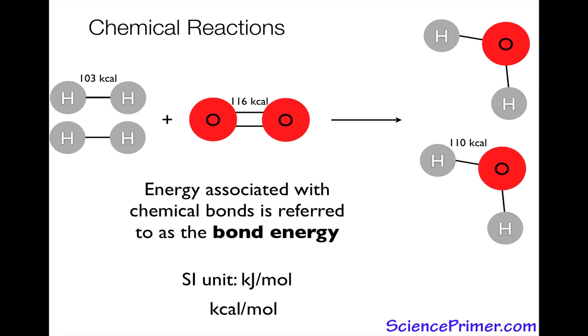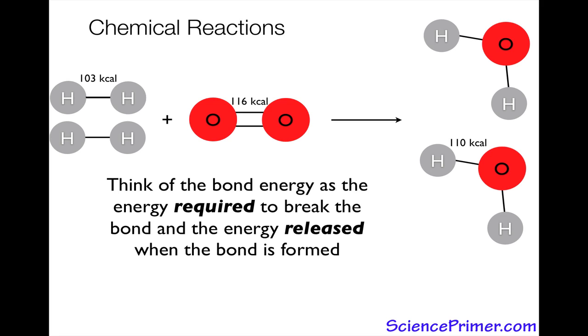To help hold on to the idea that this process, the goal of this process is to understand how much energy is either released or absorbed by a chemical reaction, you need to think of the bond energy as the energy either required to break the bonds in the reactants or the energy released when the bonds are formed in the products. If you hold on to that definition and the difference between the bonds and the reactants in the products, the logic of this process will be easier to keep track of.